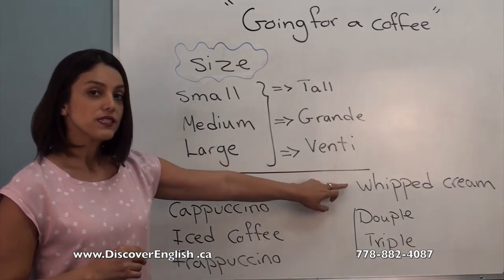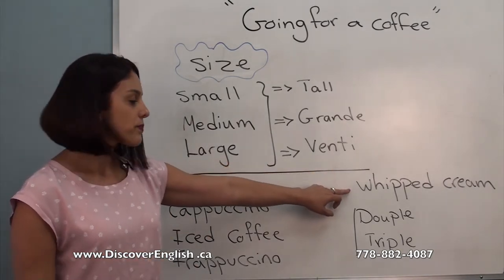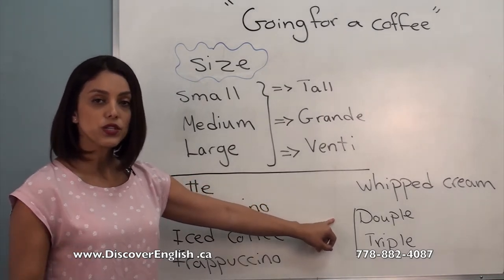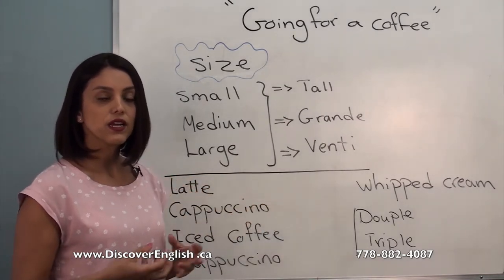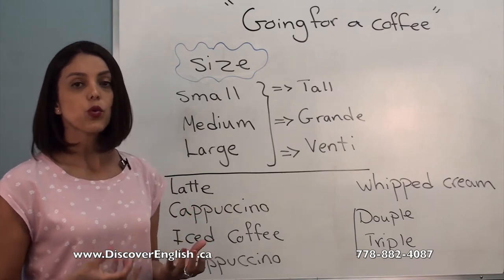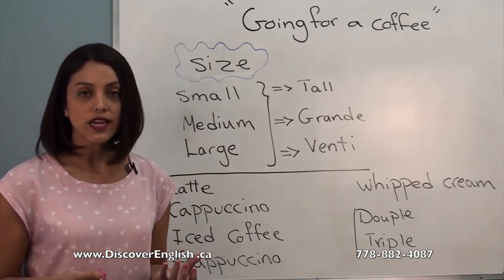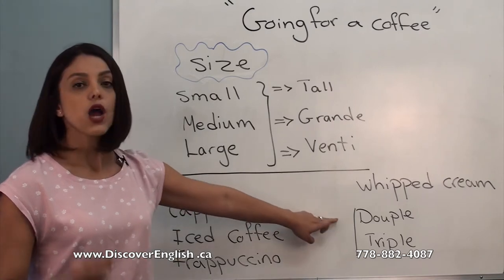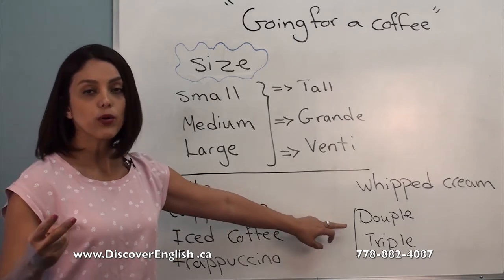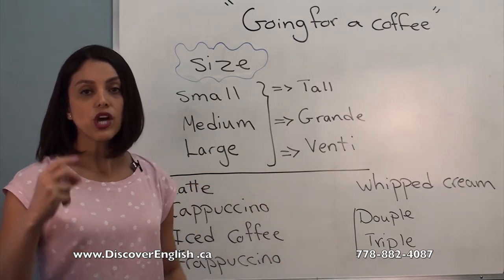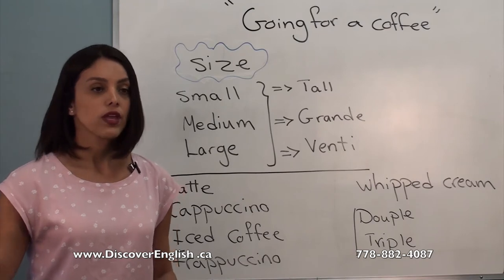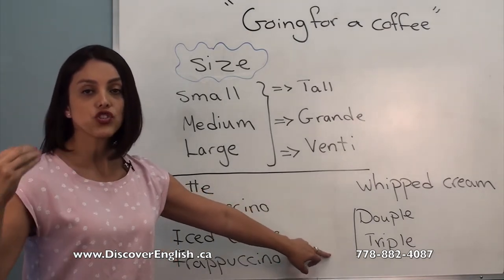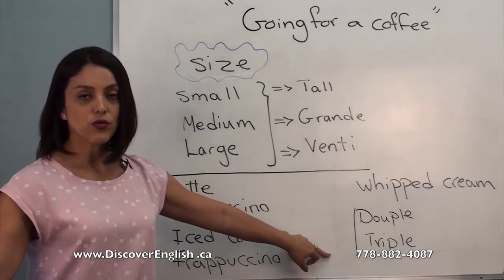Whipped cream — here's the spelling for that. If you want more espresso in your drink, for example you want a latte with more than one shot, you can say 'double,' which means two shots of espresso, or 'triple,' which means three shots of espresso in your drink.